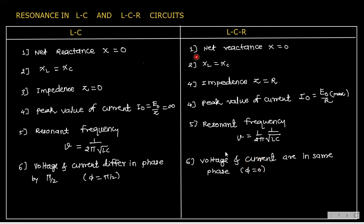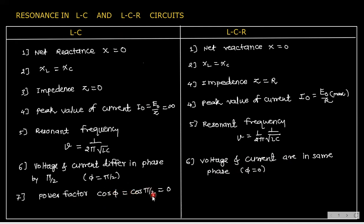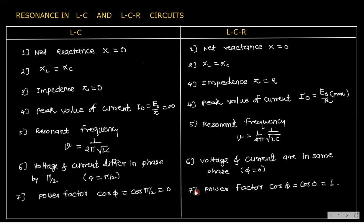Power factor: in LC oscillation, cos φ = cos(π/2) = 0, so power factor is zero. In LCR resonance, power factor cos φ = cos 0 = 1. This is the difference between resonance in LC oscillation and LCR oscillation.